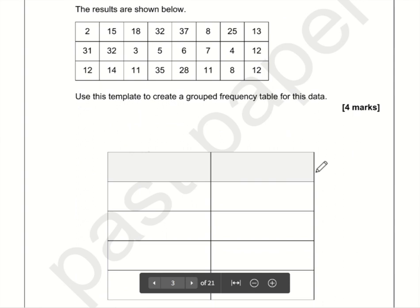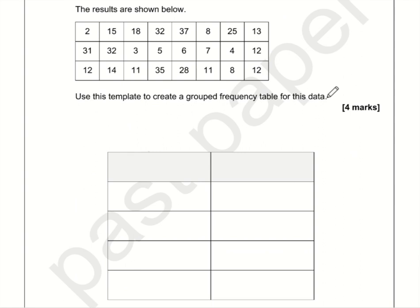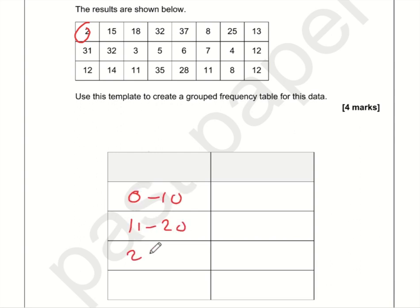We want to use this template to create a grouped frequency table for the data. We've got four rows, so we're going to be splitting this into four bands. The lowest value I can see is two and the highest is 37, so I'll go from zero to 40. Let's do this in blocks of 10: zero to 10, 11 to 20, 21 to 30, and 31 to 40.